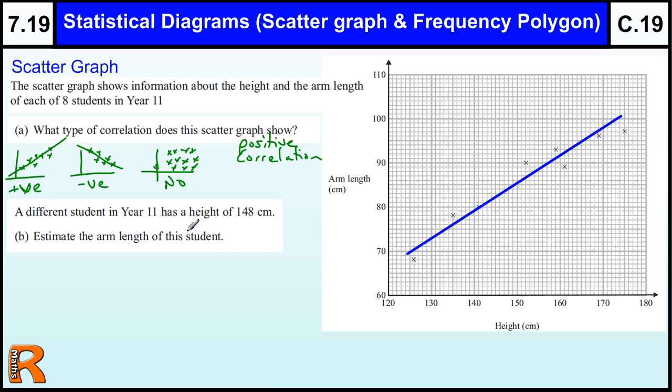This is where the line of best fit comes in. It doesn't actually ask you to draw a line of best fit, but to estimate one from the other, you really need to draw the line in. We use a height of 148cm, so we go across 148cm which is about there, we draw an arrow up to the line, and then we draw a line across to here.